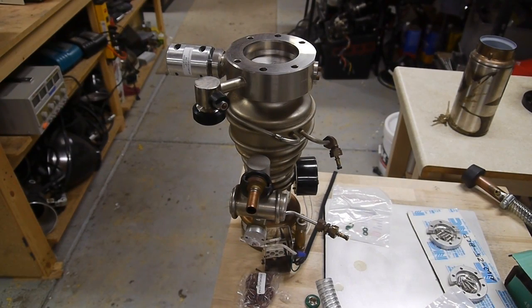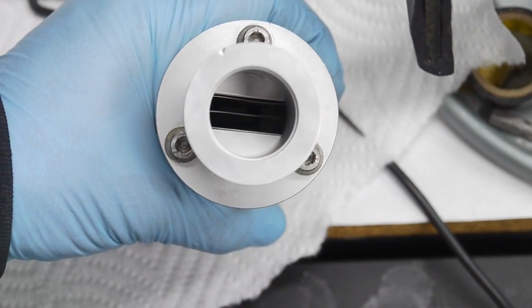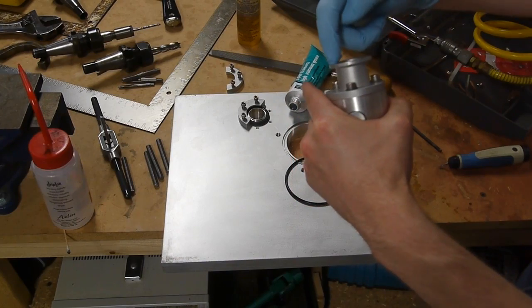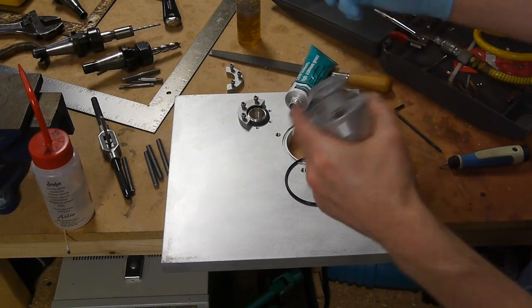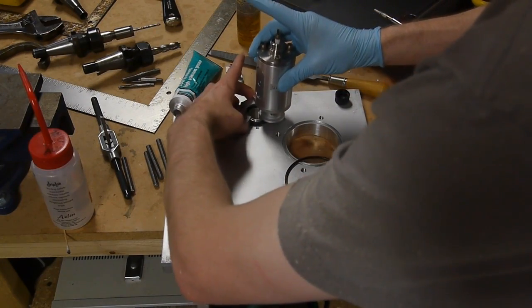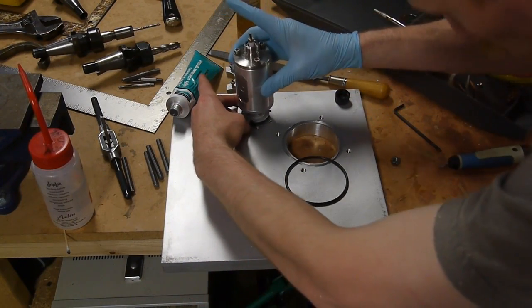Besides the diffusion pump, which is the thing that's actually creating the high vacuum inside the chamber, the only other thing I have connected right now is a penning gauge, which I refurbished in an earlier video. The penning gauge reads from about 10 to the negative 7 to 10 to the negative 3 millibar.